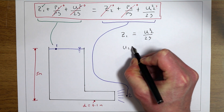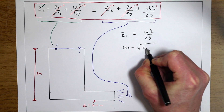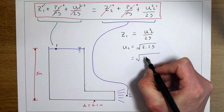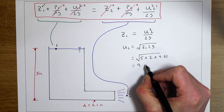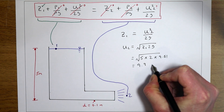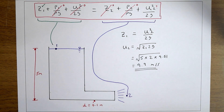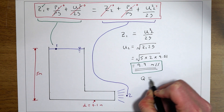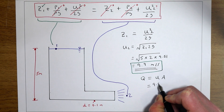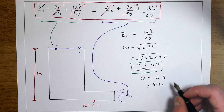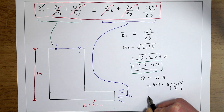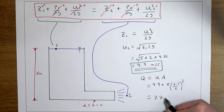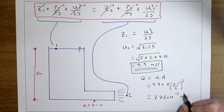We can now solve for u2, which equals the square root of 2g times z1. That gives us the square root of 5 times 2 times 9.81, which is 9.9 meters per second. Finally, to work out the flow rate using continuity, Q equals u times A. We have u = 9.9 m/s. The area of the pipe is pi r squared, where r equals diameter divided by 2. This gives a final flow rate of 7.78 times 10 to the minus 4 cubic meters per second.